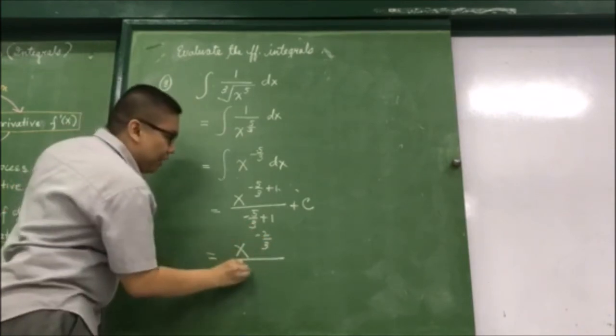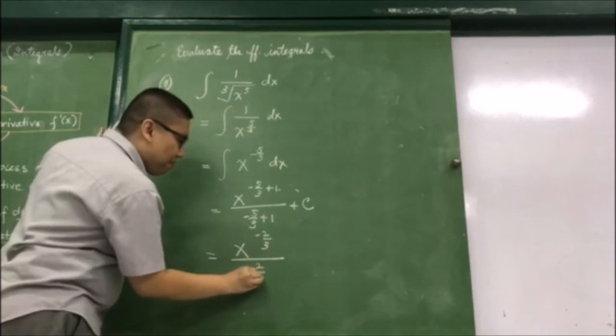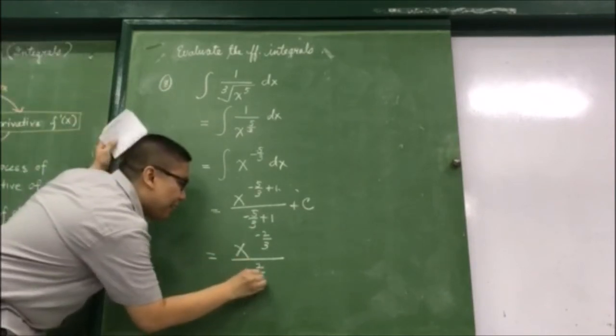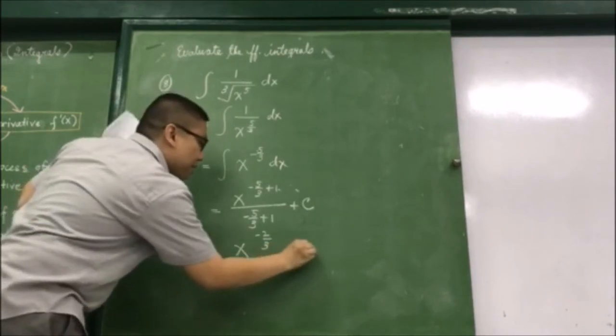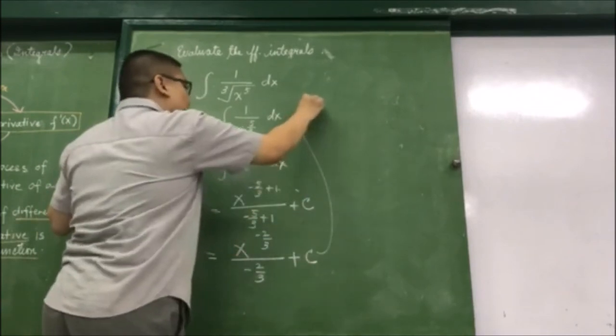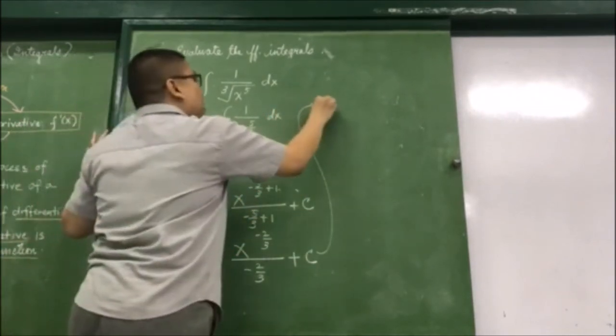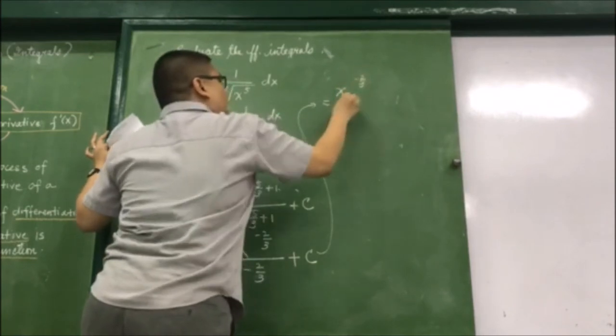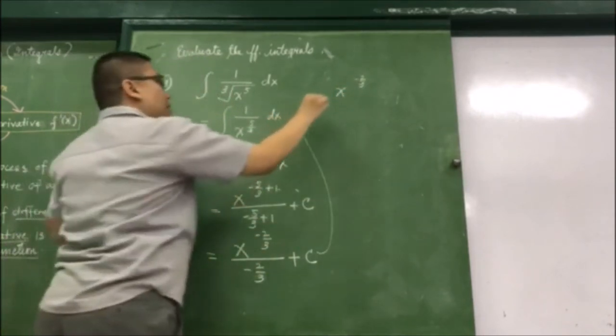Over negative 5 thirds. This is x raised to negative 5 thirds over...